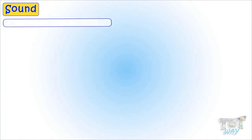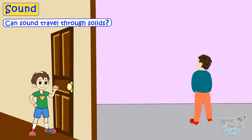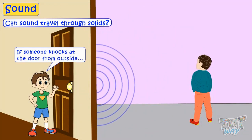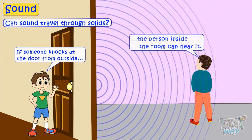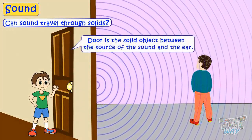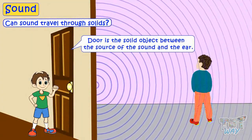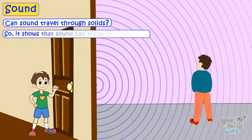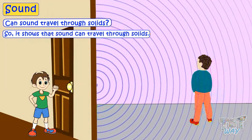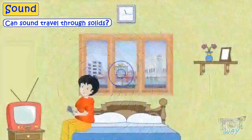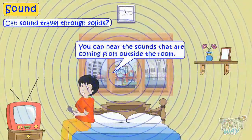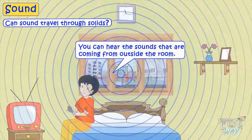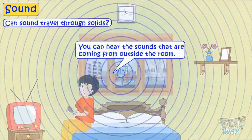Now let's see if sound can travel through solids. If someone knocks at the door from outside, the person inside the room can listen. There is a solid object — a door — between the source of the sound and the ear. So it shows that sound can travel through solids. If there is any loud noise outside the room, you can hear the sounds coming from outside, which shows sound can travel through solids.